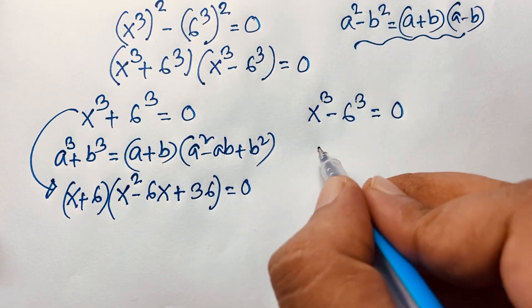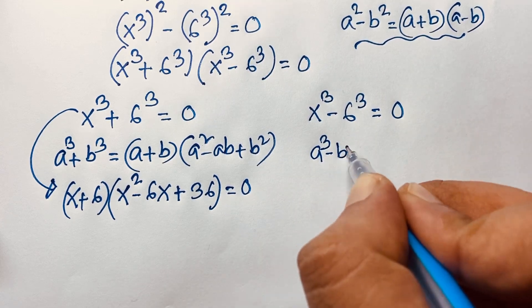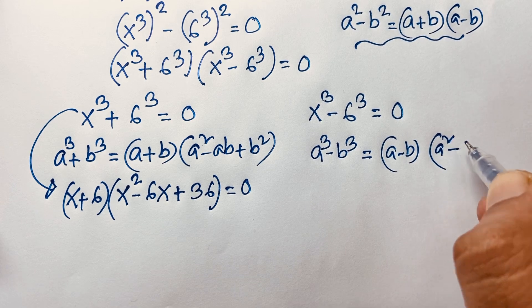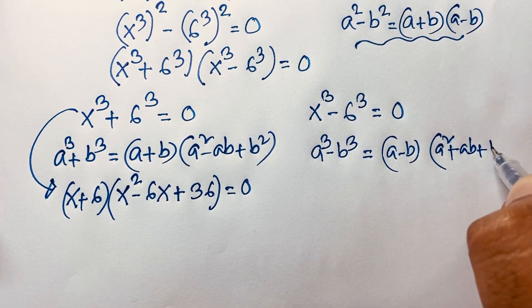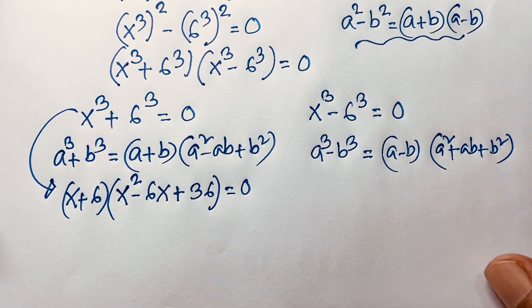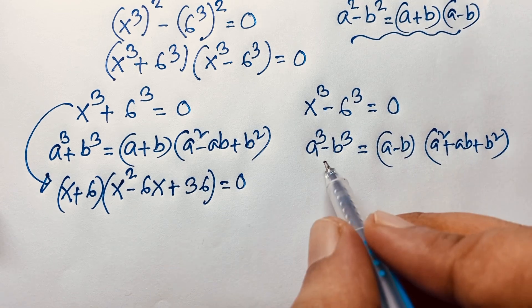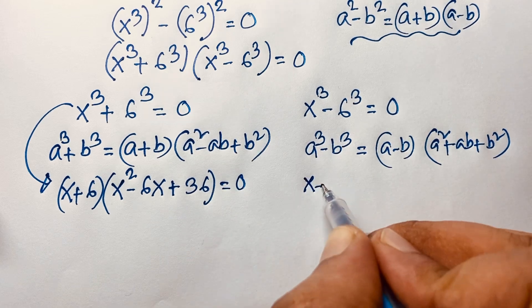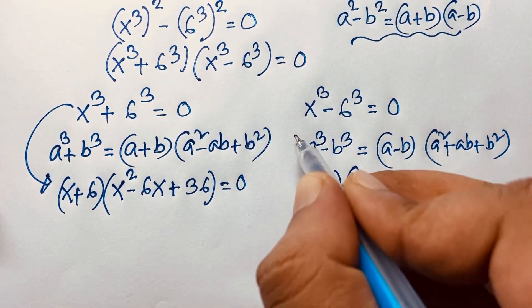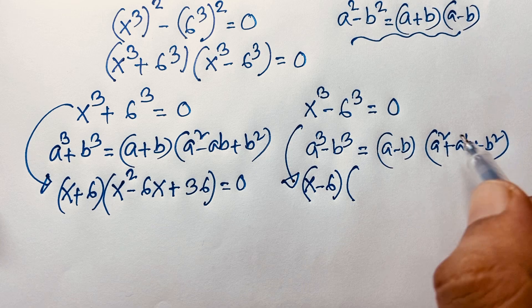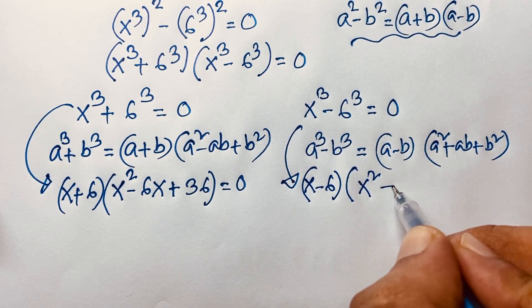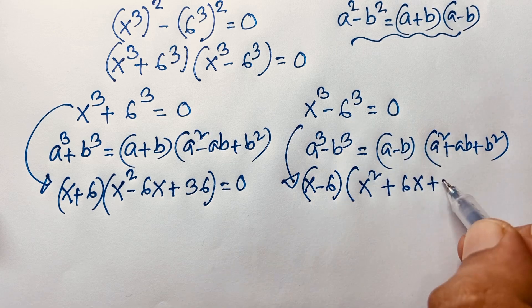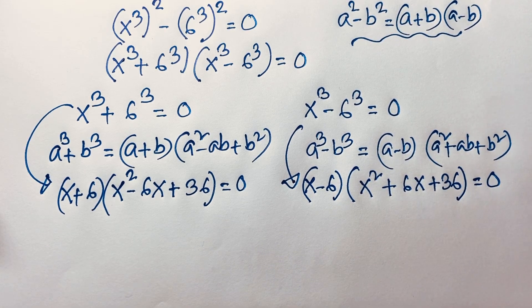Case 2: x^3 - 6^3 = 0. Using the difference of cubes formula a^3 - b^3 = (a-b)(a^2 + ab + b^2), this becomes (x - 6)(x^2 + 6x + 36) = 0.